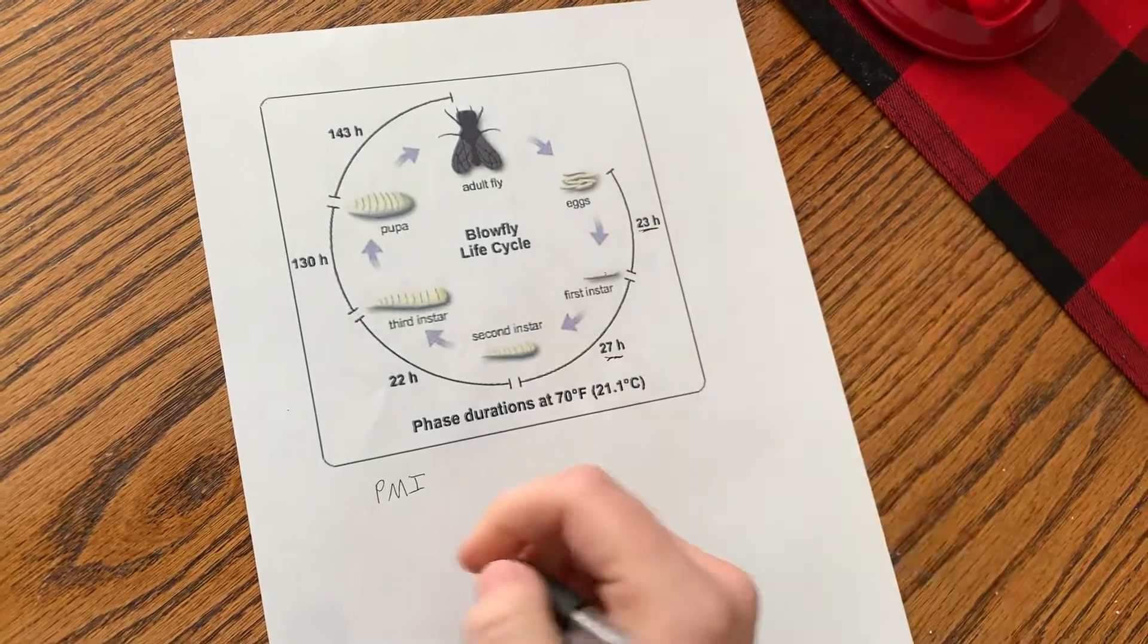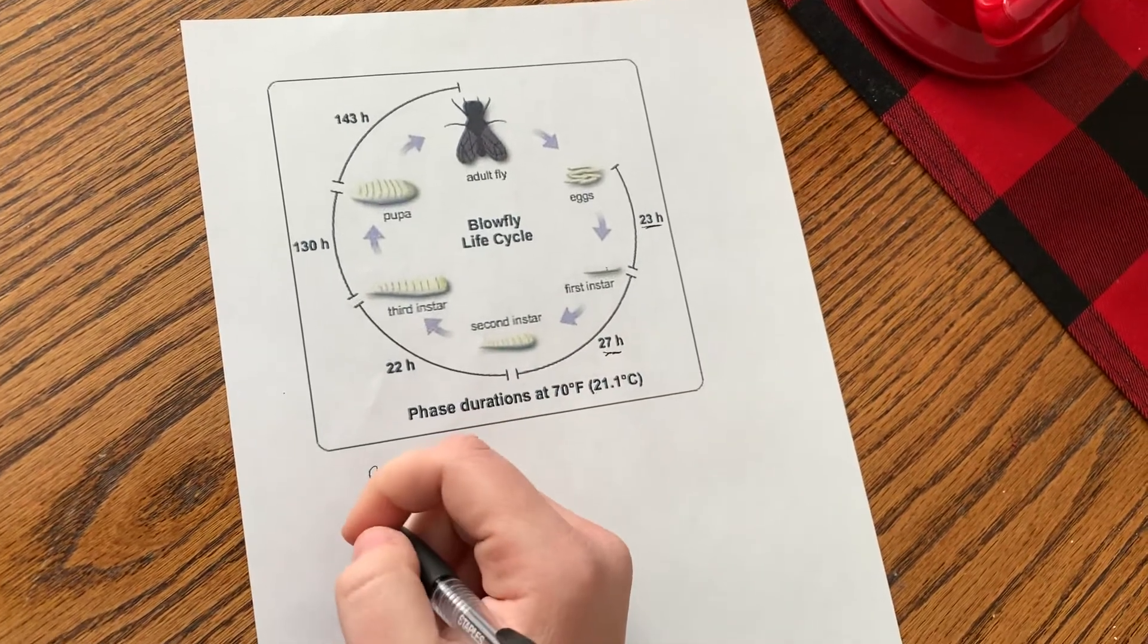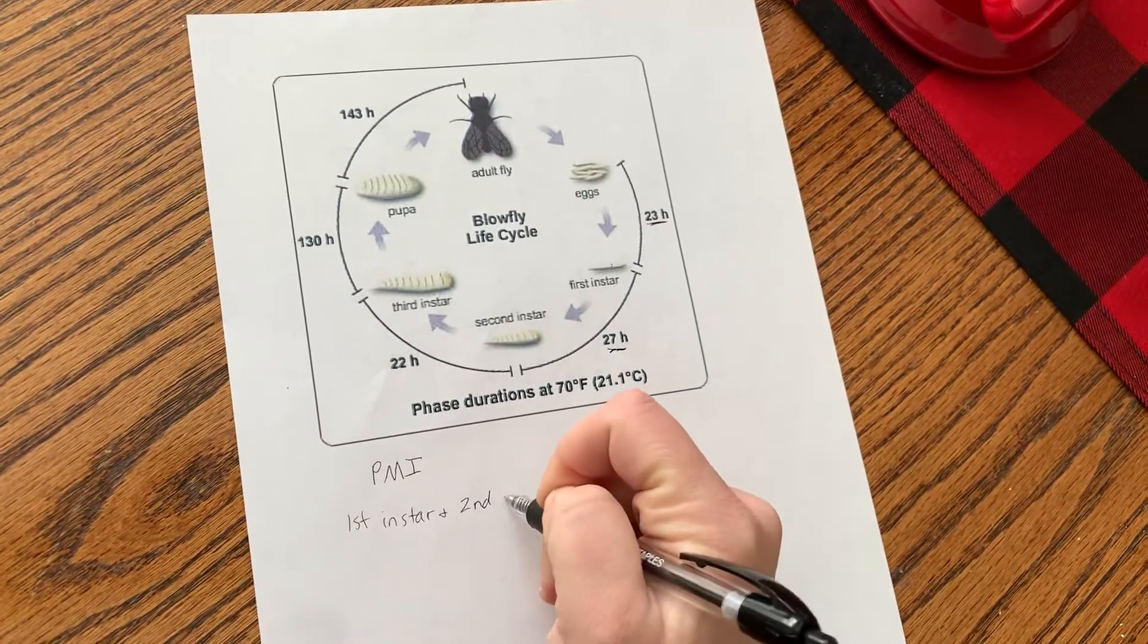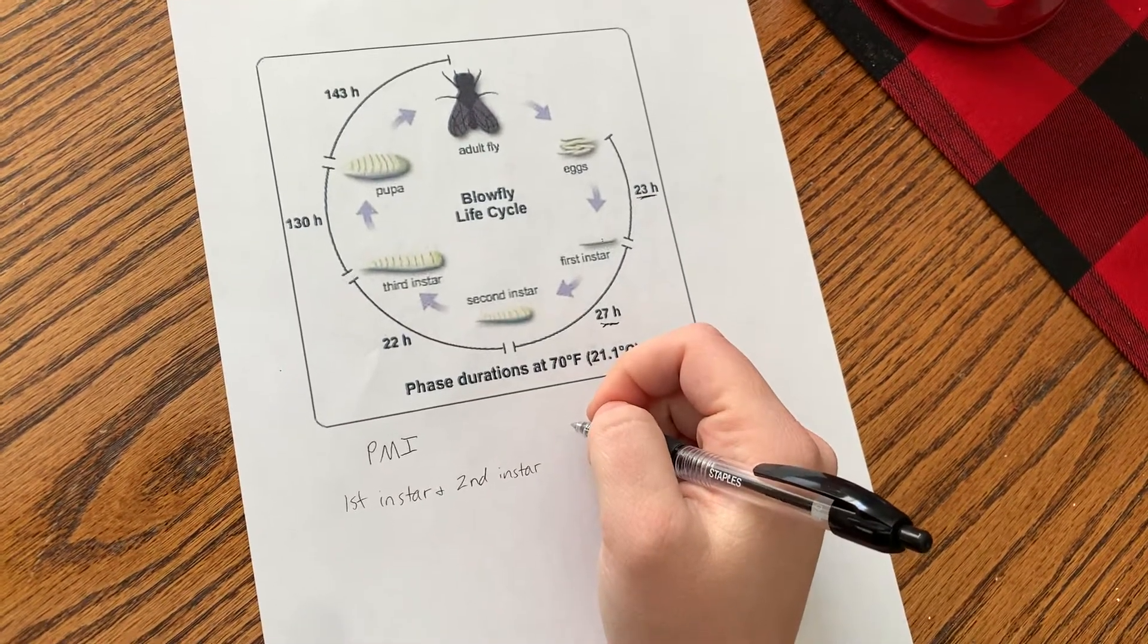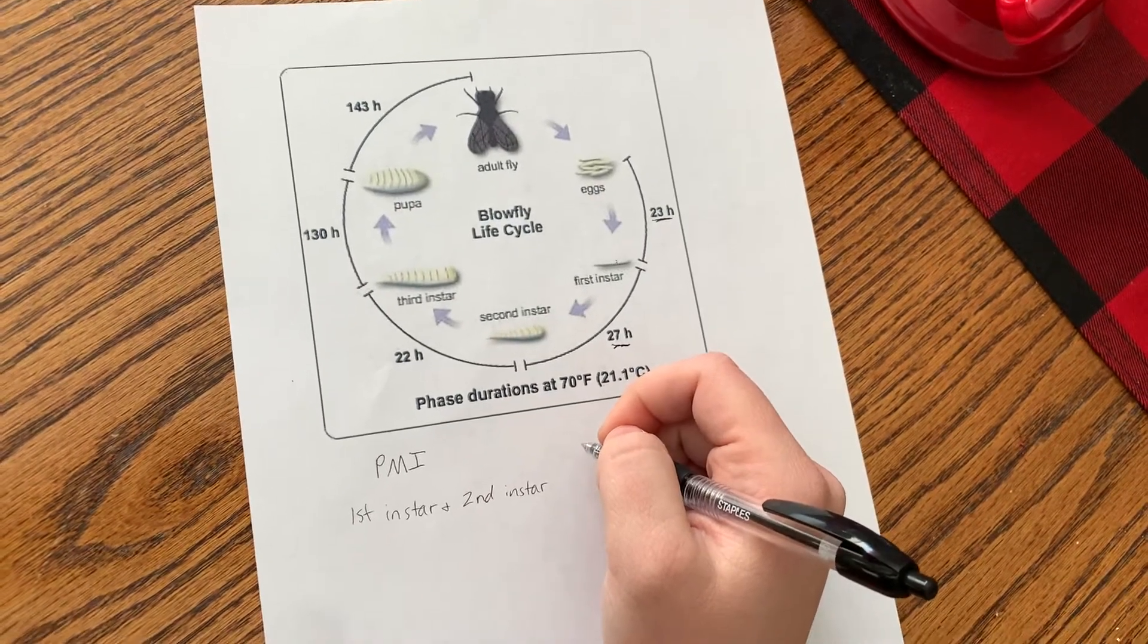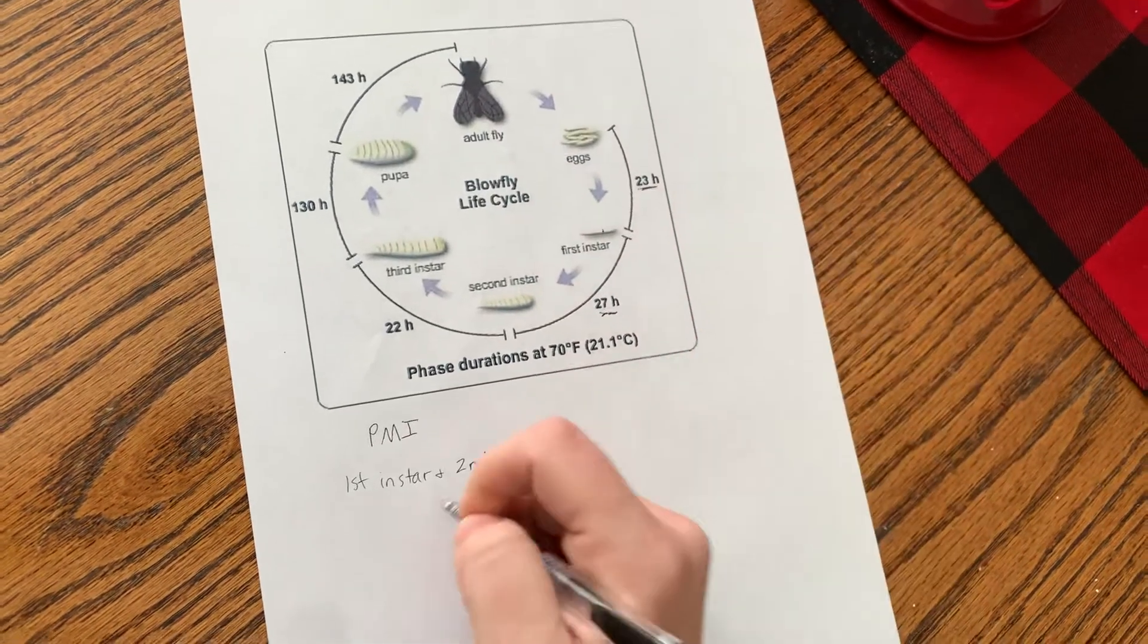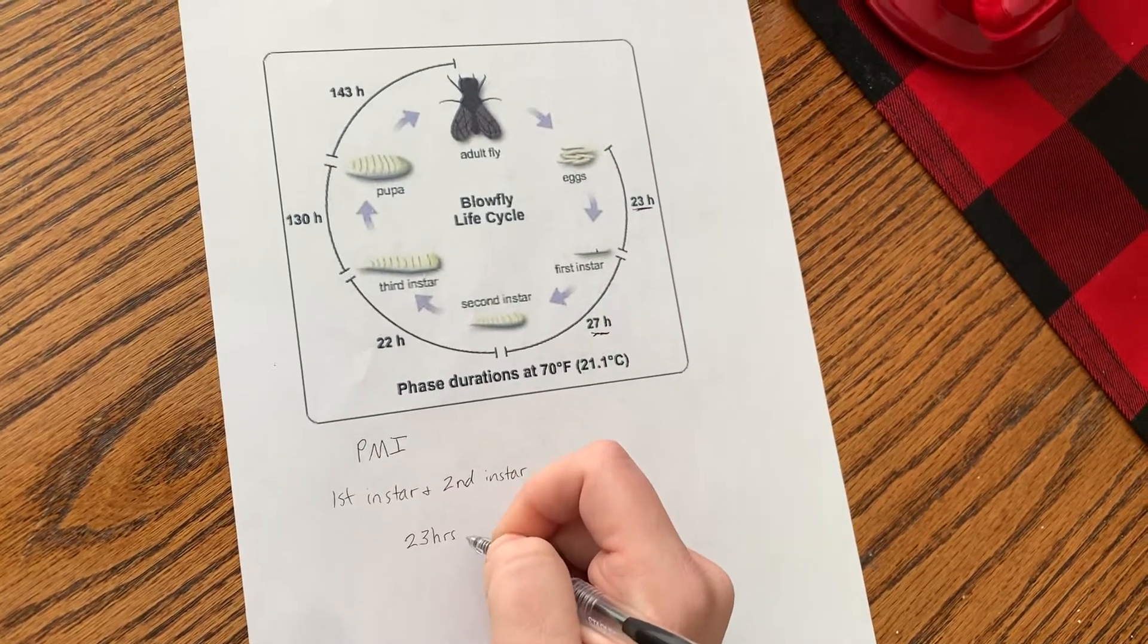So if you come upon a decomposing body and you find, say for example, first instar and second instar larvae, well we're going to look and see what that means for our post-mortem interval or our time since death. So we know that it takes 23 hours for an egg to turn into first instar larvae. So that is the beginning of our window of when the person could have died.